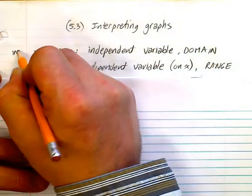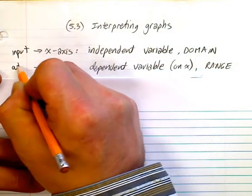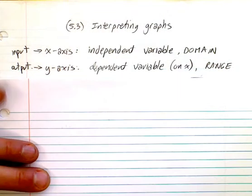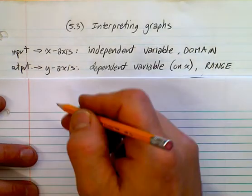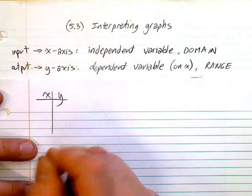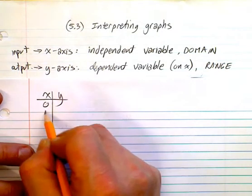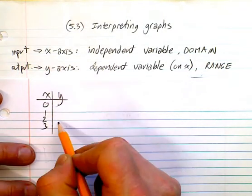This is the input and this is the output. So, whenever you make a t-table, for example, if you ever make a t-table, then you choose the x's. You usually choose 0, 1, 2, 3, whatever, and you find the y's, right, given on your function.